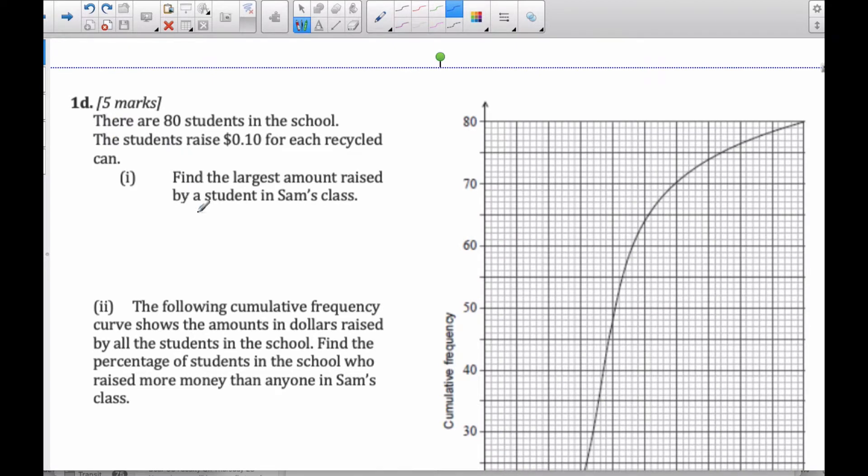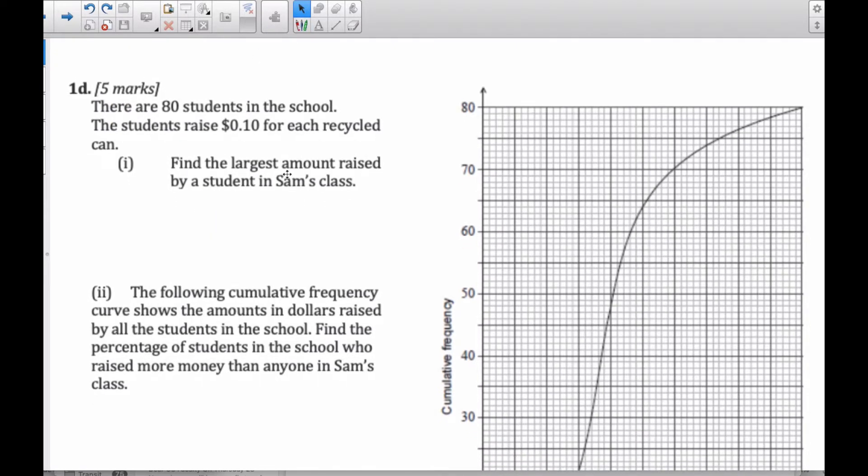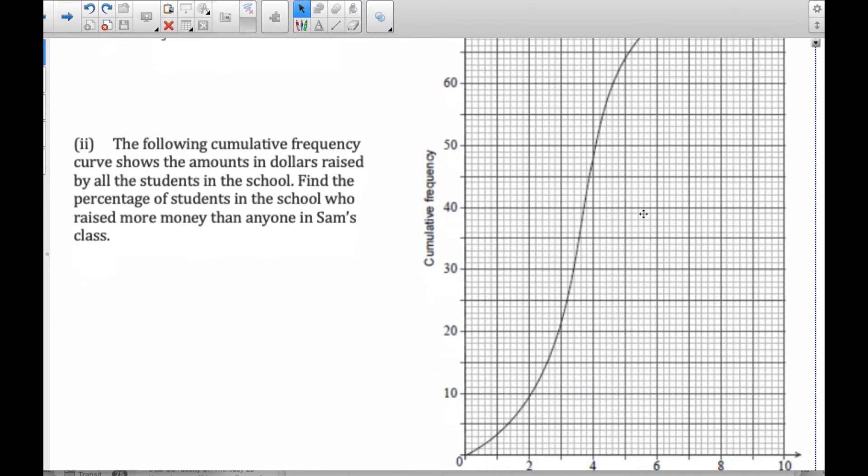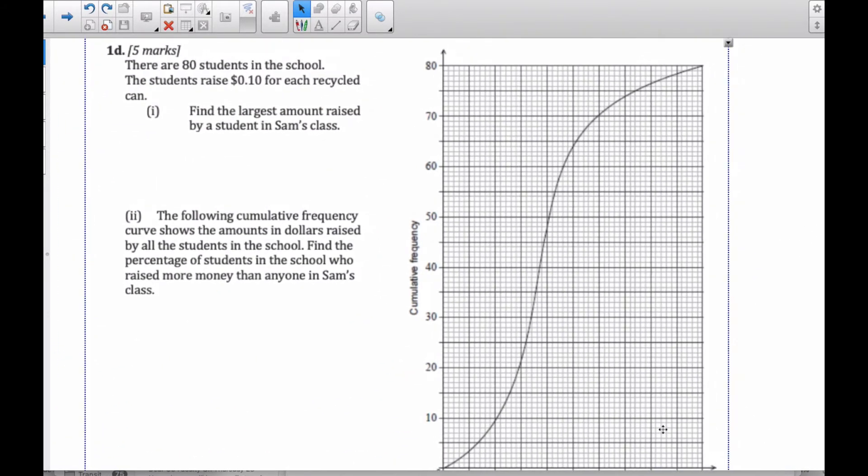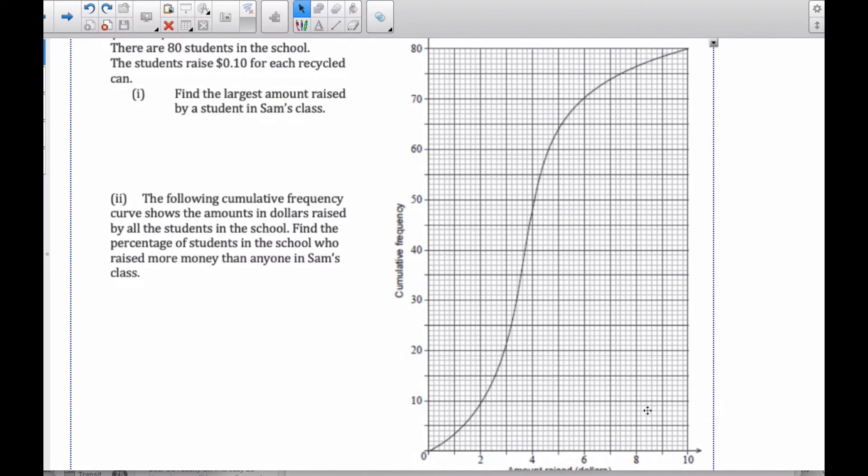Continuing along. Now we're on to a cumulative frequency graph here. And so my cumulative frequency graph, let me reorient it a little bit so we can see everything. Okay, so there are 80 students in the school, and the students raise 10 cents for each recycled can. Find the largest amount raised by a student in Sam's class.